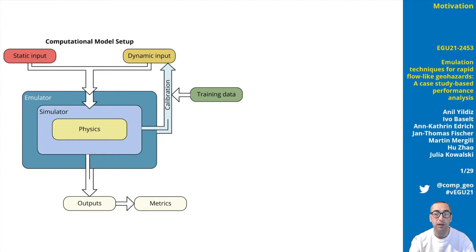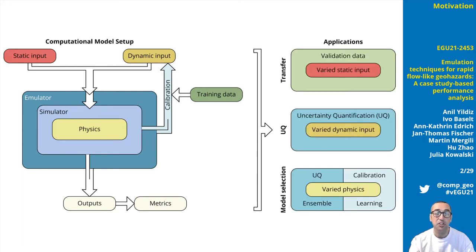Several powerful physics-based computational landslide runout models have been developed and validated throughout the last years. The geohazards community applies forward models in simulation tools to predict potential landslide runout, including the uncertainties, and uses inverse approaches to infer on model parameters for calibration purposes. It is still a challenging task to turn these computational frameworks into robust, transparent, and transferable simulation-based decision support tools for geohazard mitigation.